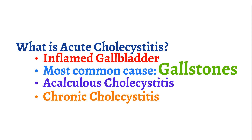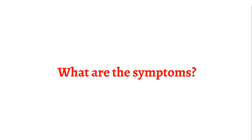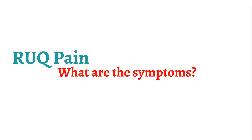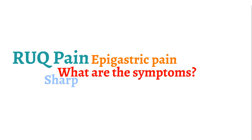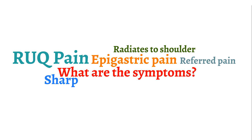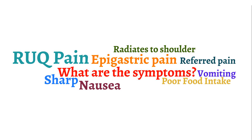What are the symptoms of acute cholecystitis? The most common symptom is abdominal pain. Patients generally present with right upper quadrant or epigastric pain. The pain is generally sharp and can radiate to the right shoulder or back because of referred pain. Patients may also describe nausea, vomiting, and poor food intake. Many patients note that fatty foods in particular make the pain and symptoms worse.